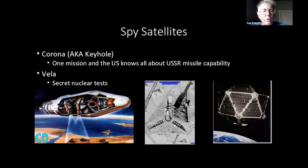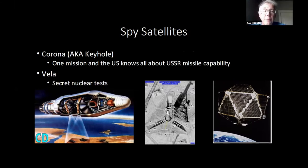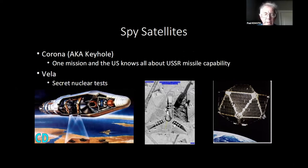The first satellites that came out were the Corona satellites — the classified name was Keyhole, as in looking through a keyhole. That was the first thing we actually developed to get real information from space. Spy satellites were the first thing. One of the first successful flights with these Corona satellites — one mission — and the film we recovered from that one mission gave us more knowledge about the Soviet Union's missile capability than we'd ever had before, with no risk to human life.